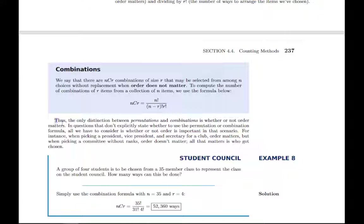So make sure you understand that the only distinction between permutations and combinations is whether or not order matters. So if order matters, it's permutations. If order is not significant, if it doesn't matter, then it's a combinations problem.